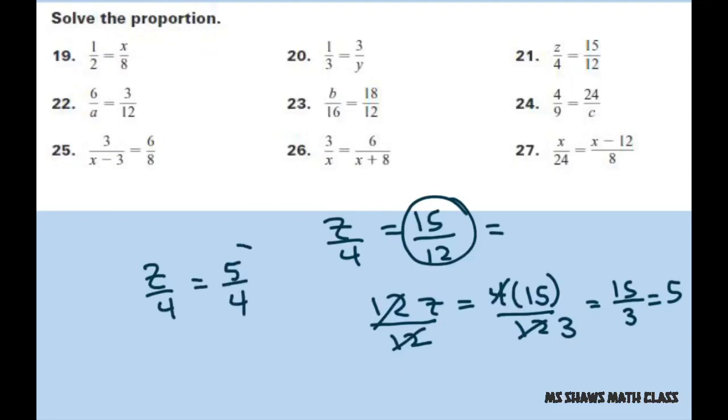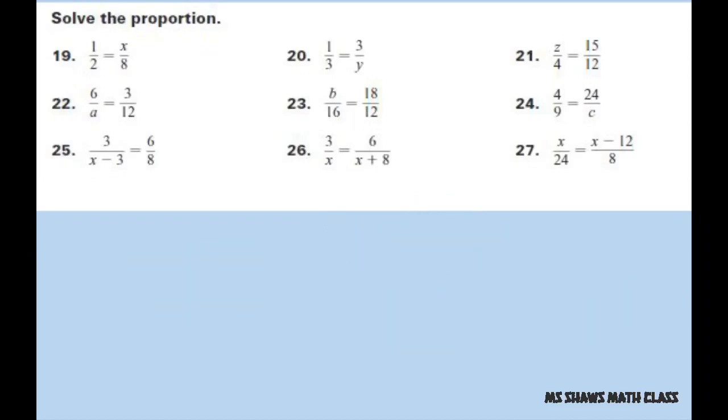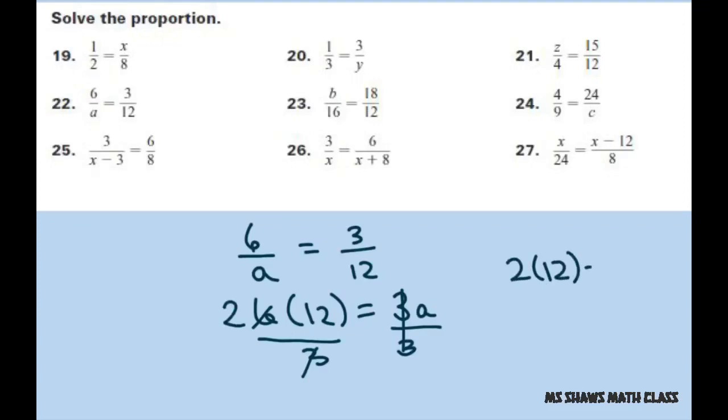Okay, the next one: 6 divided by a equals 3 divided by 12. Cross multiply: 6 times 12 equals 3a. Divide both sides by 3. 3 goes into 6 two times, so 2 times 12 equals 24, which equals your a.